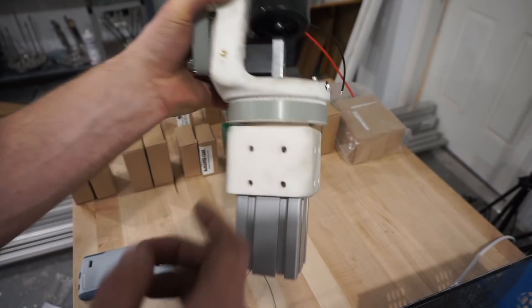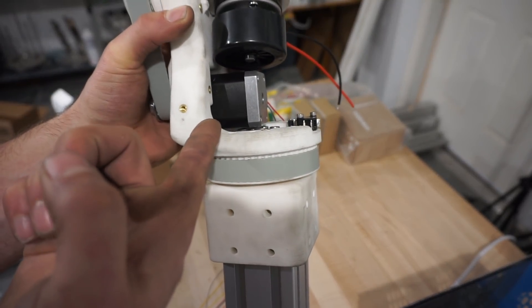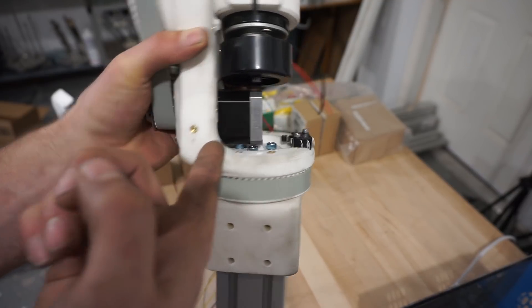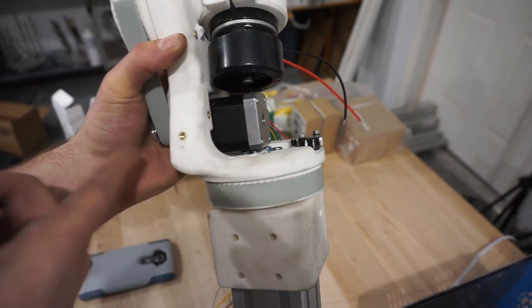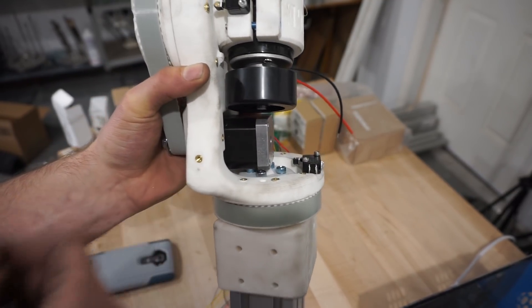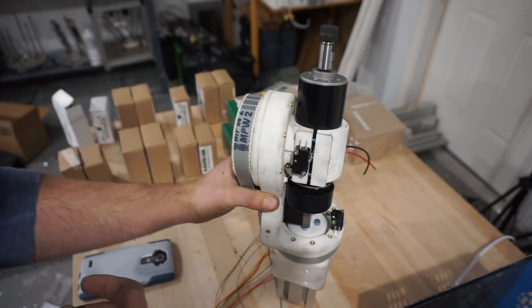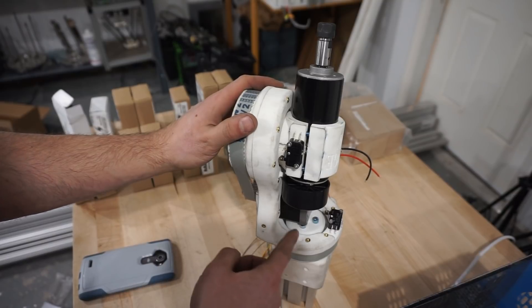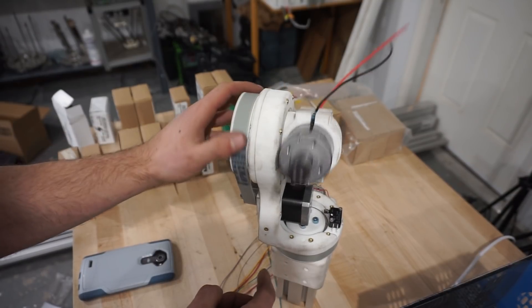I'm pretty worried though that if this was printed non-SLS, it would just shear off right here. Because this is very thin. This works with this printing method, but not with maybe—so maybe ribs could be added going down across here or something like that.